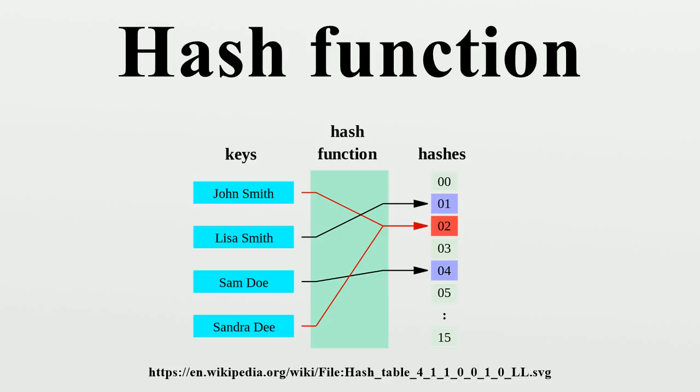Uniformity. A good hash function should map the expected inputs as evenly as possible over its output range. That is, every hash value in the output range should be generated with roughly the same probability. The reason for this last requirement is that the cost of hashing based methods goes up sharply as the number of collisions, pairs of inputs that are mapped to the same hash value, increases. If some hash values are more likely to occur than others, a larger fraction of the lookup operations will have to search through a larger set of colliding table entries.